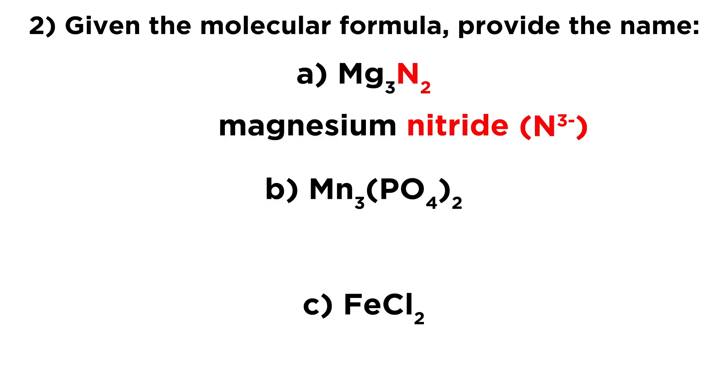And then the anion, therefore, must be the nitride ion. We have N3 minus. That's when nitrogen gains three electrons to attain neon electron configuration. And so we have three Mg2 pluses and two N3 minuses. And that gives us magnesium nitride.